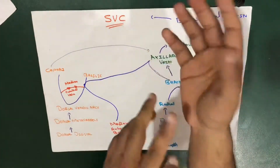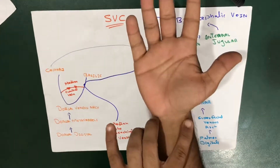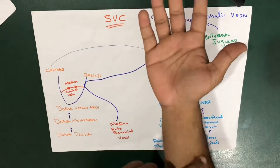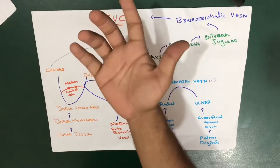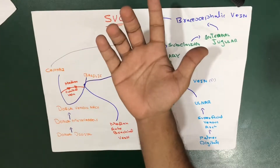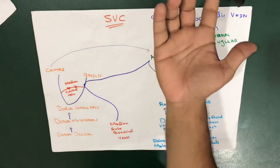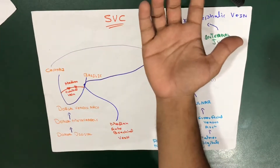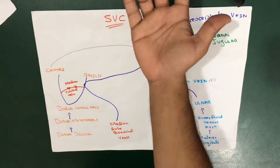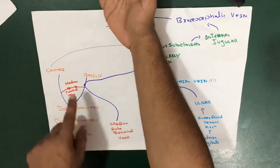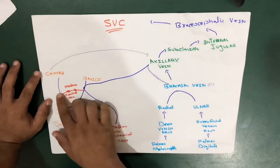The pinky side is the medial side. Both veins — the cephalic and basilic — turn towards the anterior, palmar side. The cephalic vein travels on the lateral side of the anterior forearm, and the basilic vein is on the medial side towards the pinky finger.